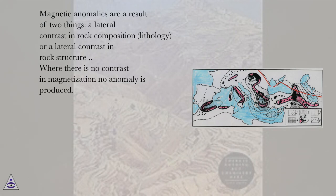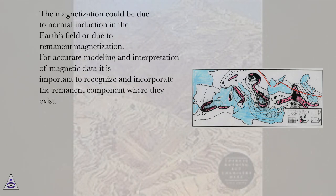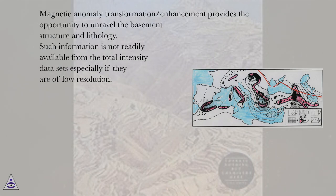Where there is no contrast in magnetization, no anomaly is produced. The magnetization could be due to normal induction in the Earth's field or due to remnant magnetization. For accurate modeling and interpretation of magnetic data, it is important to recognize and incorporate the remnant component where they exist. Magnetic anomaly transformation and enhancement provides the opportunity to unravel the basement structure and lithology. Such information is not readily available from total intensity data sets, especially if they are of low resolution.